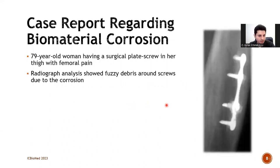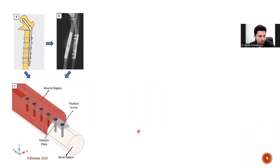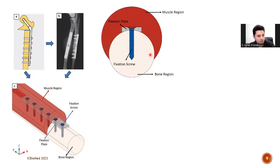Here, a case report regarding biomaterial corrosion is given. A 79-year-old woman carrying a surgical plate-screw system went to a hospital with a complaint of femoral pain. It was reported by radiographic analysis that the pain was caused by corrosion-based debris around the screws, as shown here. In our laboratory, this scenario was modeled in finite element-based software to figure out how the corrosion mechanism develops for a plate-screw system implanted in the human body. First, the plate-screw system on a cortical bone under the muscle was designed as shown, and electrochemical analysis was performed for a galvanic corrosion situation in a cross-sectional plane.